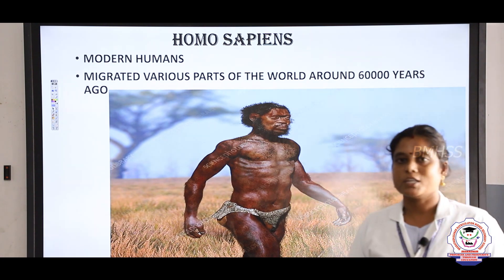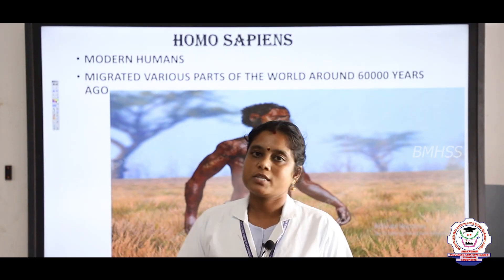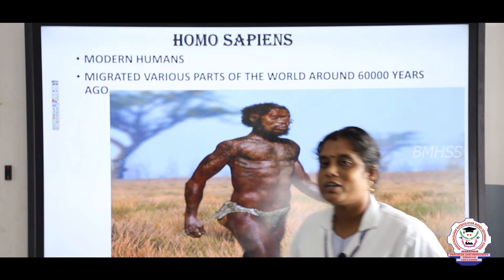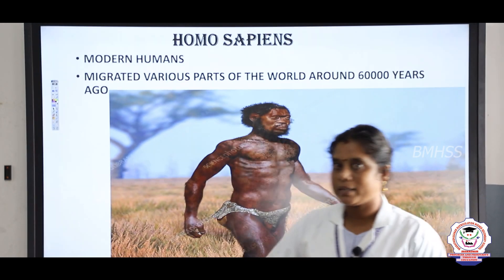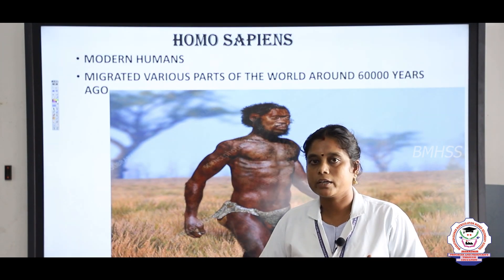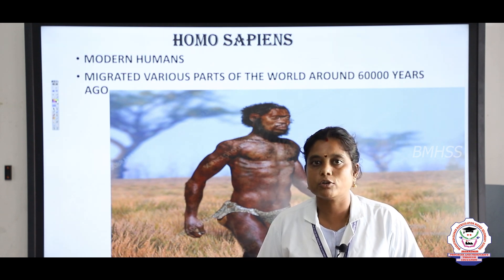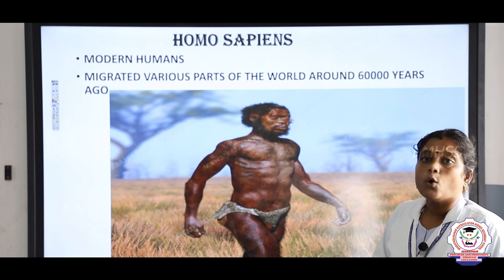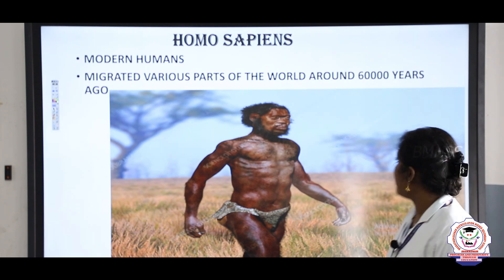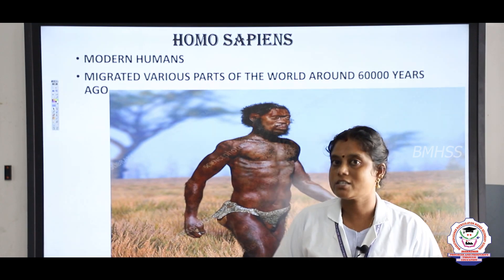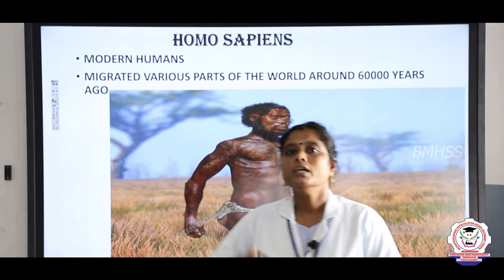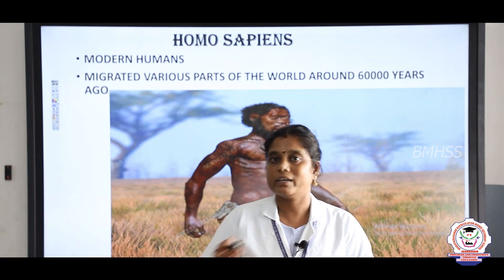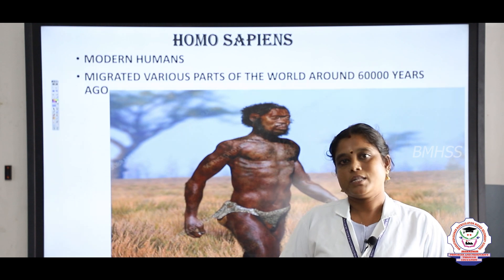Homo sapiens, the last species, are also known as modern humans — that is what we are. They were migrated to various parts of the world around 60,000 years ago, and that is when migration started for Homo sapiens.